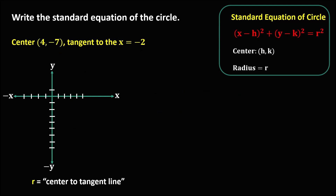For this given, we need to plot the coordinate of the center. So x is positive 4 and y is negative 7, counting 1, 2, 3, 4, 5, 6, 7 — so this is negative 7. We connect to locate the point of the center. Since the circle is tangent to x equals negative 2, this is the tangent line.